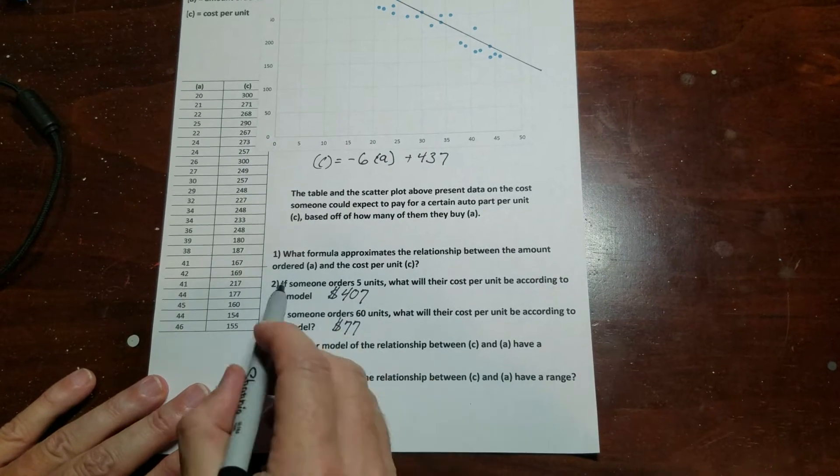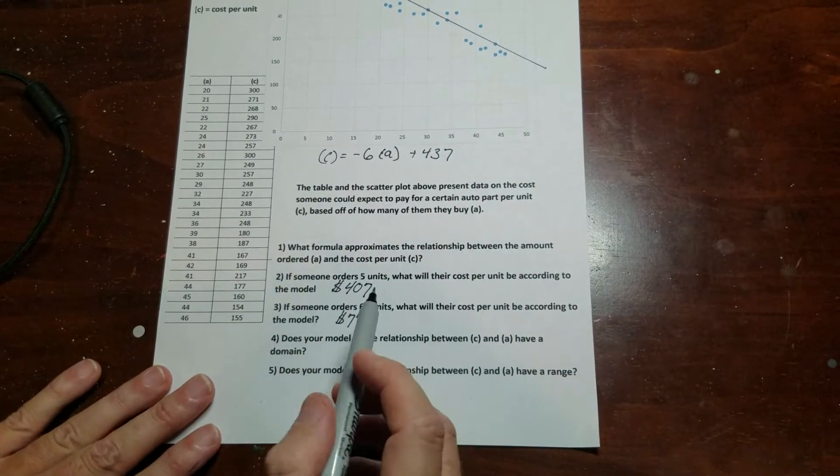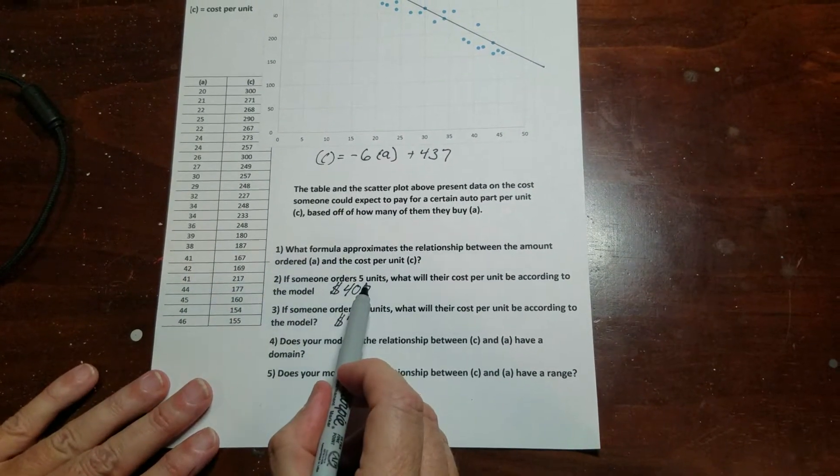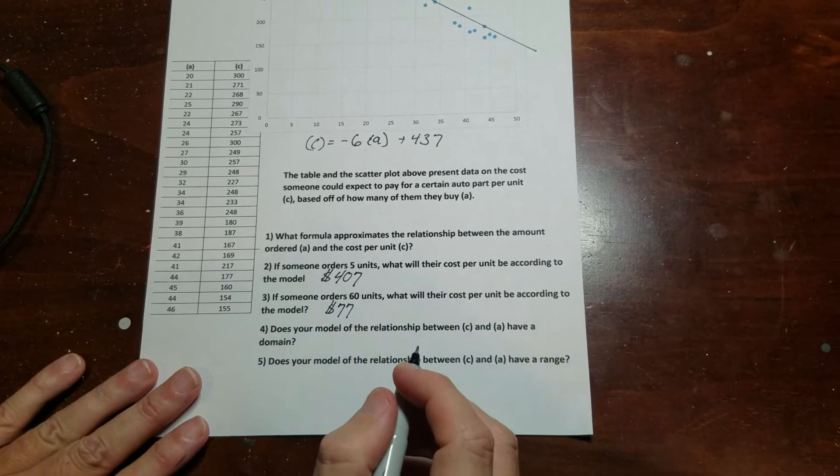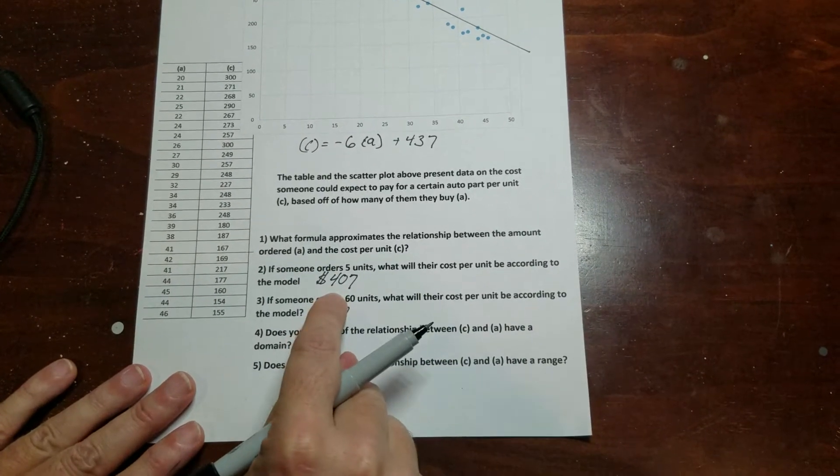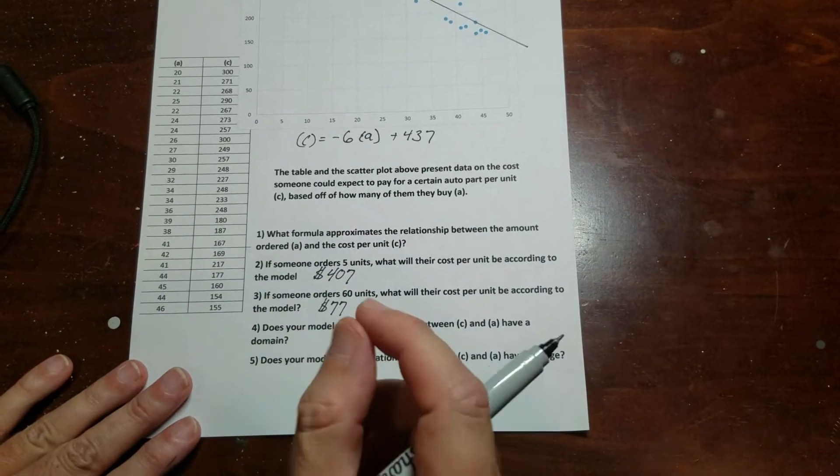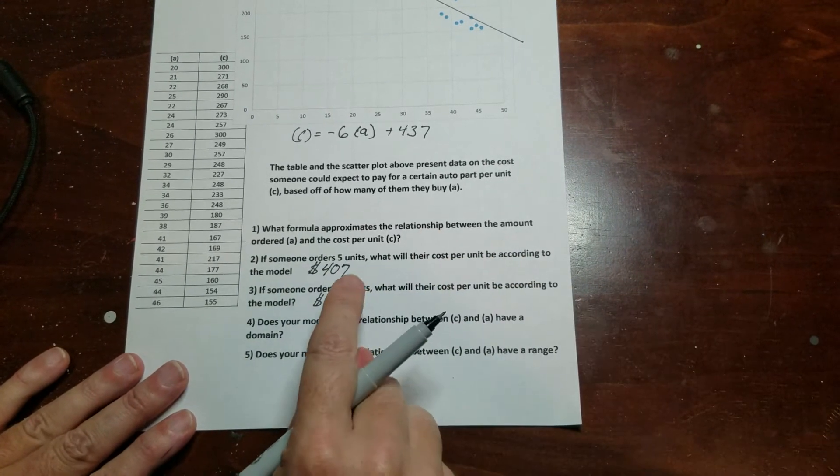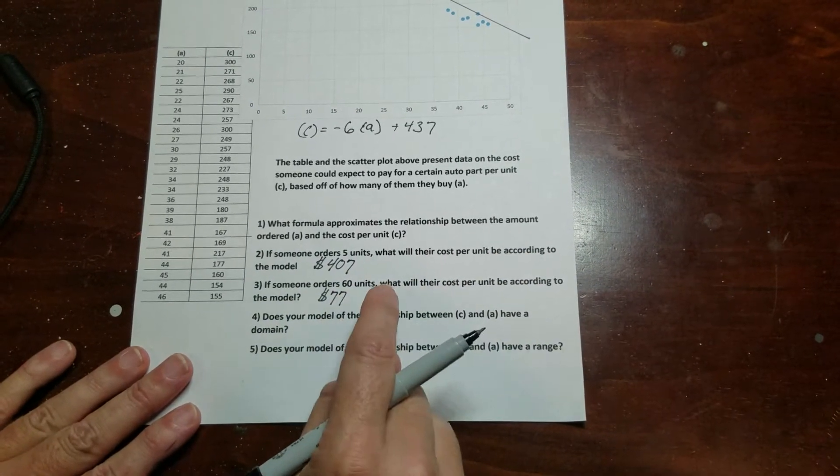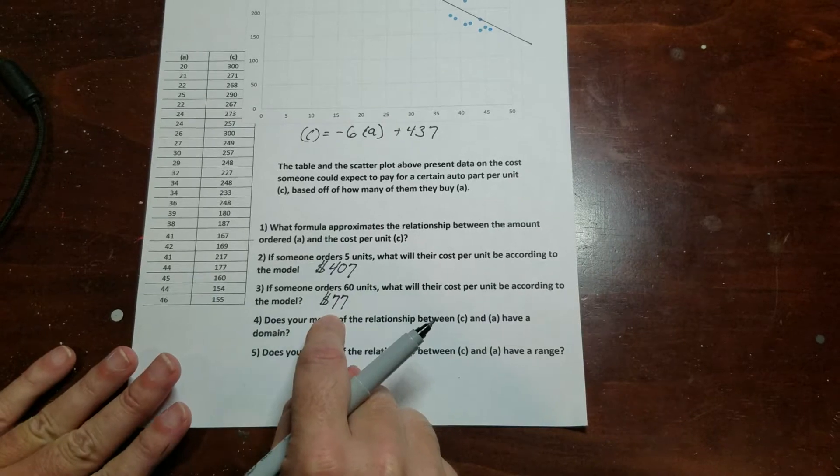So we could see two of the questions from last time - if someone orders five units, what will their cost per unit be? This person would have to pay $407 per unit, whereas when somebody else orders 60 units, they're only paying $77 per unit.